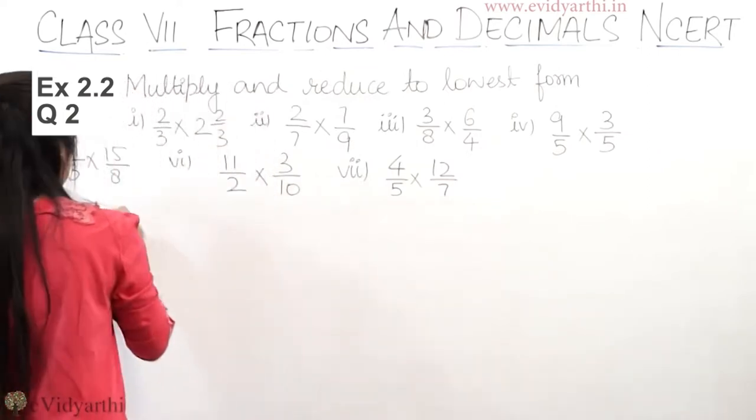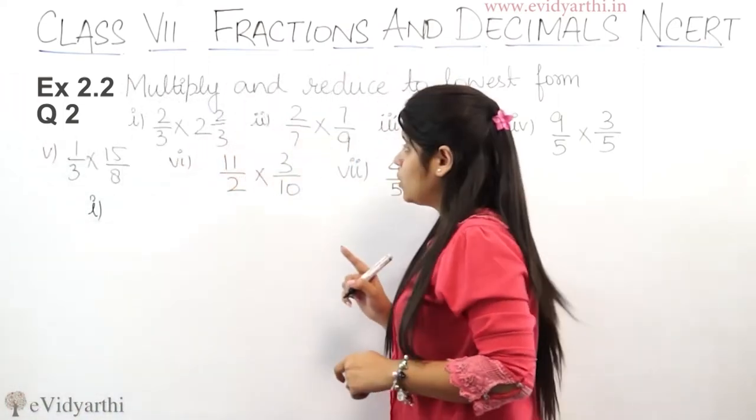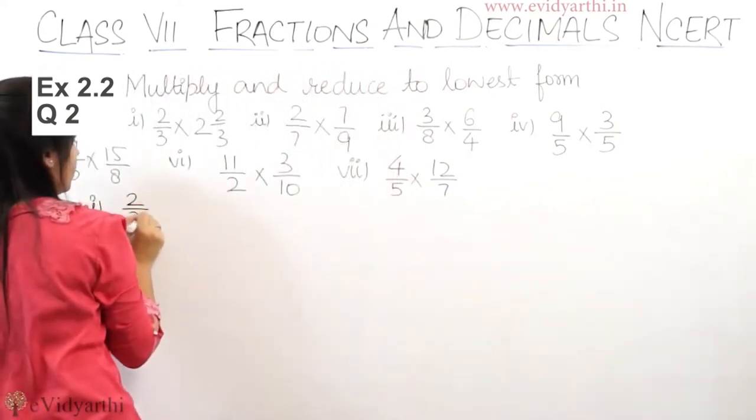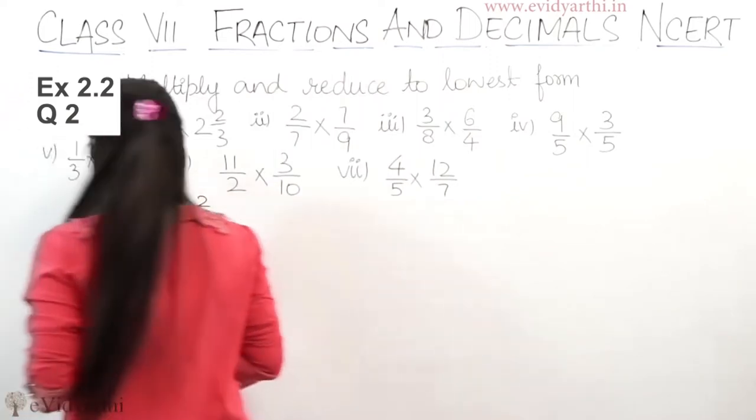So start with the first part. First part is 2 upon 3 into 2 2 upon 3. So this is 2 upon 3 into 2 2 upon 3. Check it.